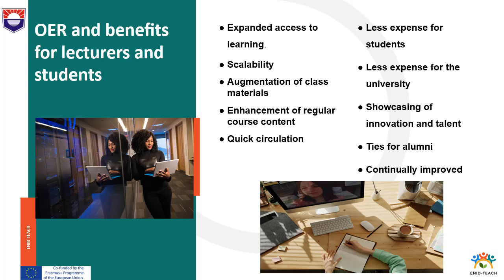The main differences between open educational resources and other products that are often mistaken for OERs — such as free online resources under copyright license and open access articles and monographs — are that OERs are modifiable, while modification is not permitted for copyright-protected materials, and for open access resources special permissions are needed.